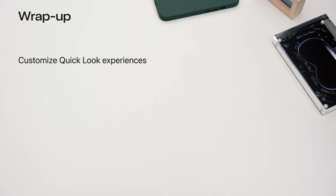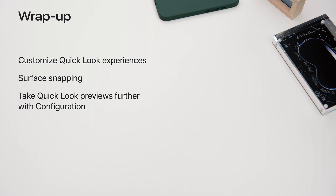Let's wrap up this talk. With the Preview Application API, your app has more control over the windowed QuickLook experience. This extends to collection views, editing, and managing sessions. Surface snapping makes it easier to position 3D models on horizontal surfaces. And finally, configurations allow you to take QuickLook previews even further and open up new use cases in product education and design. This was what's new in QuickLook. I can't wait to see what you create.